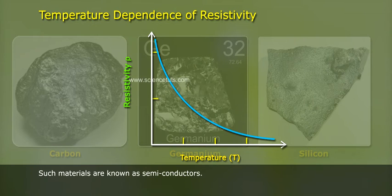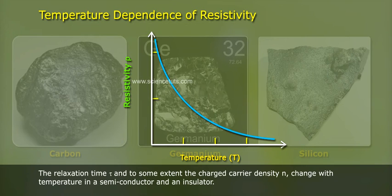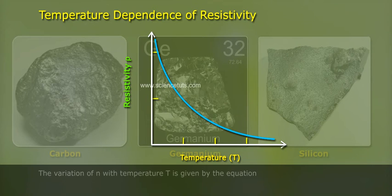Such materials are known as semiconductors. The relaxation time τ and to some extent the charge carrier density n change with temperature. In a semiconductor and an insulator, the variation of n with temperature T is given by the equation: